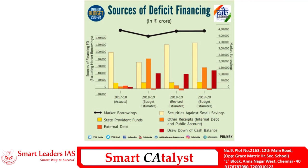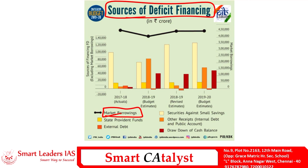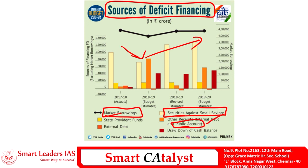This slide talks about the various sources of deficit financing used by the government of India. Market borrowing stands first — for the past three years it has been the largest source of deficit financing, contributing about four lakh fifty thousand crores. It is followed by securities against small savings schemes, which reduced in 2018-19 but has again increased for budget estimates 2019-20. Other sources include internal debt, public account, state provident funds, and external debt, which has seen a negative trend.